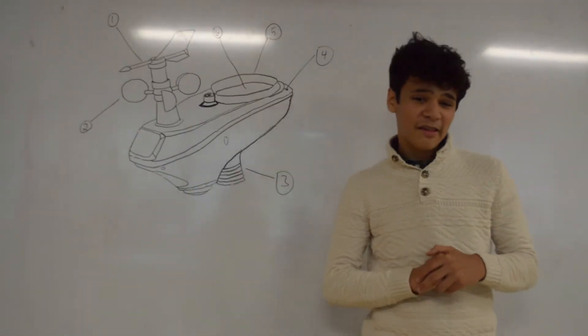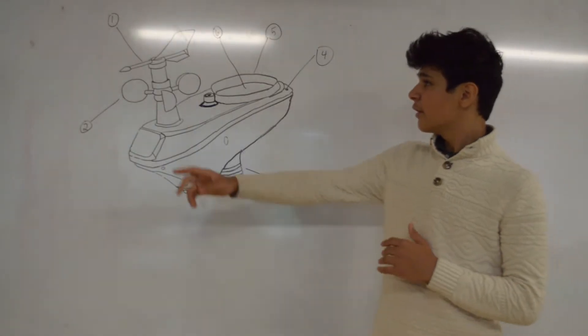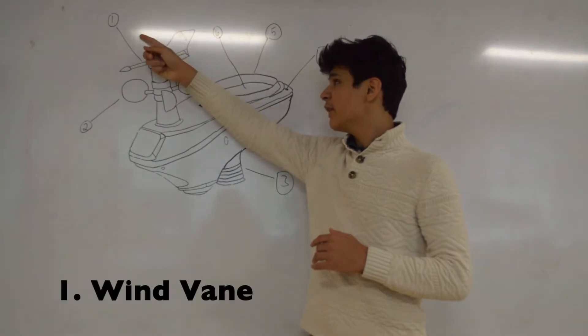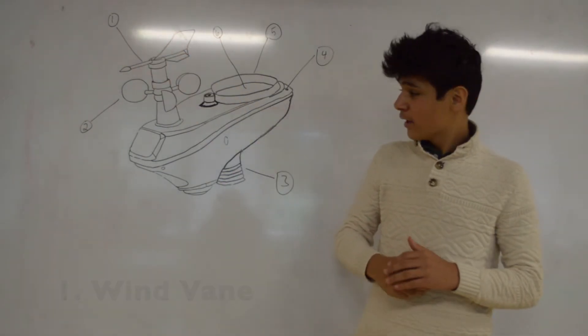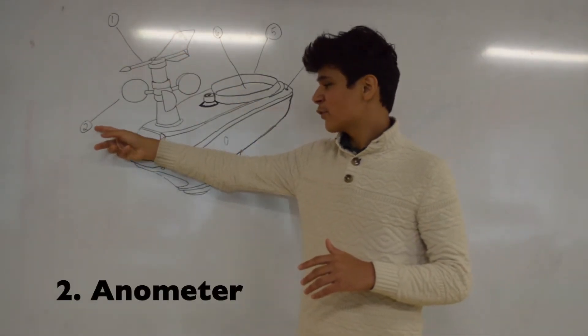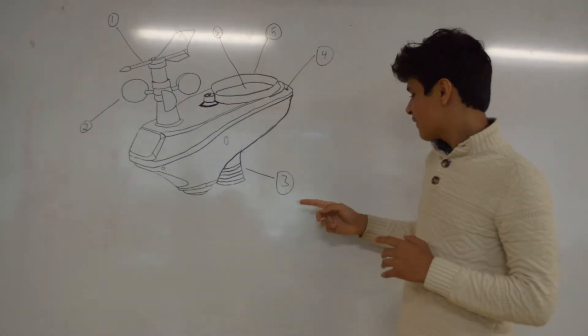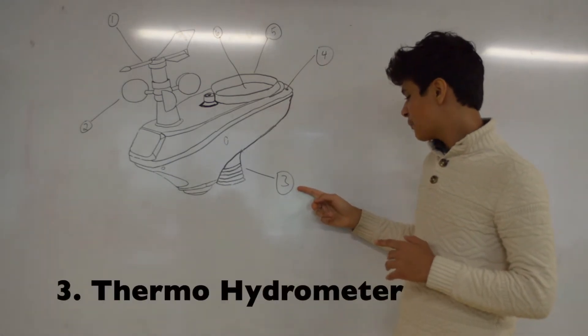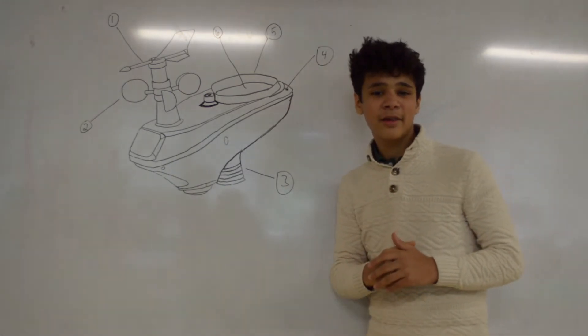This is the PWS up close. This is the wind vane, which measures wind direction. This is the anemometer, which measures wind speed. This is the thermal hygrometer, which measures temperature and humidity.